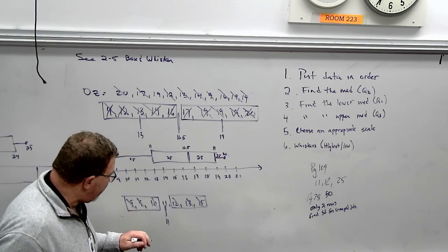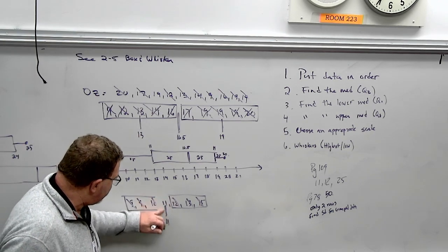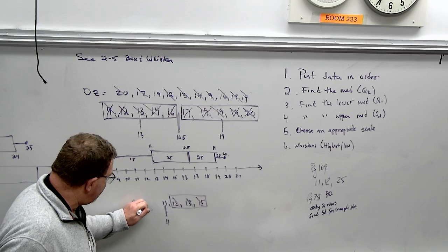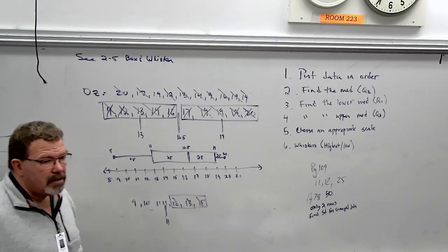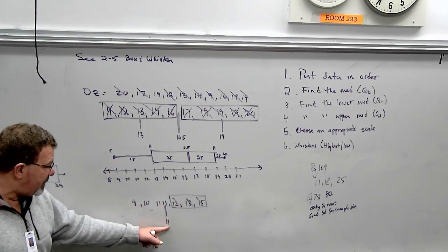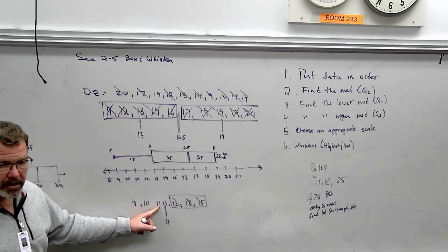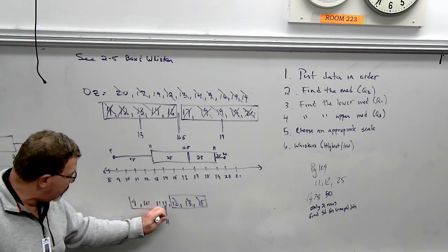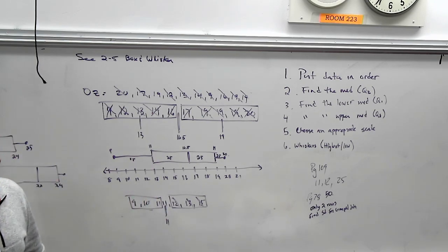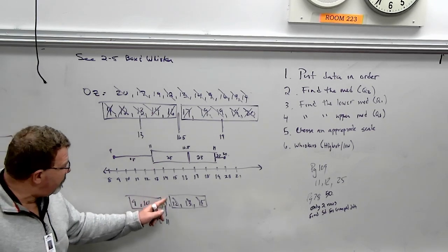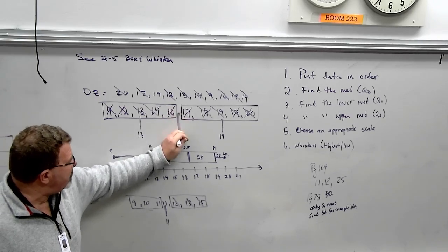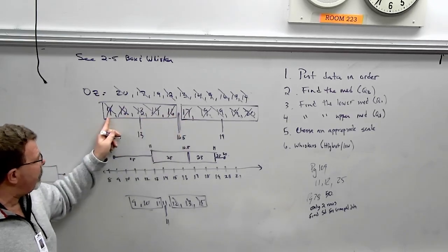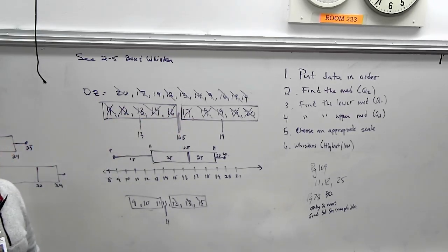And then also another thing that messes people up is when this happens. 9, 10, 11. They're like, well, 11 is the median, so I guess I don't include this. This 11 is below that. So I would still put a box around that. Does that make sense? So that's why whenever I find the median, I always do this, and I clearly can see what numbers are below it and what numbers are above it.